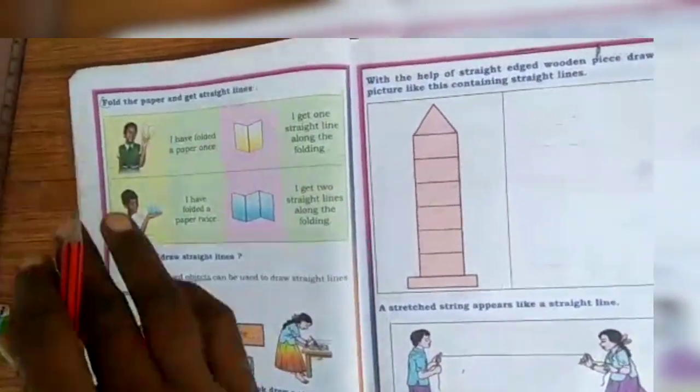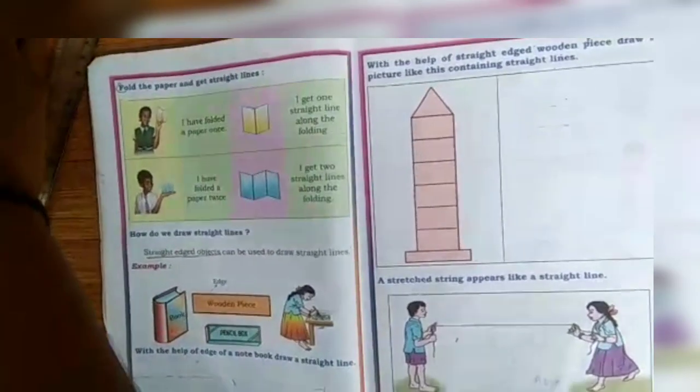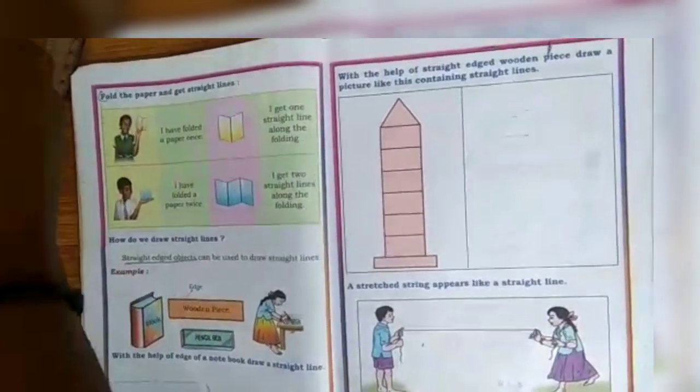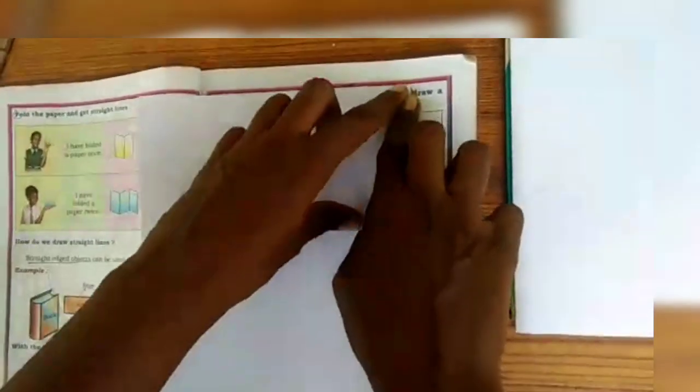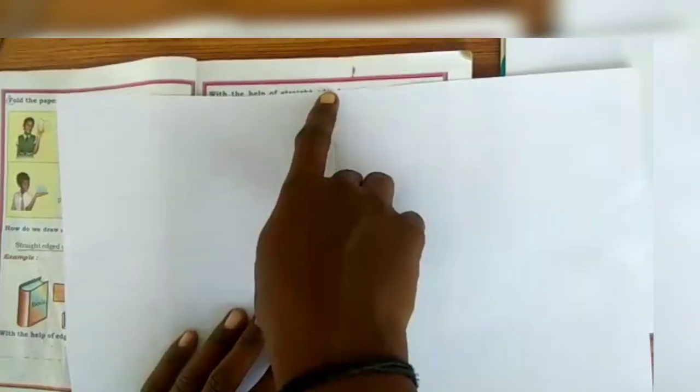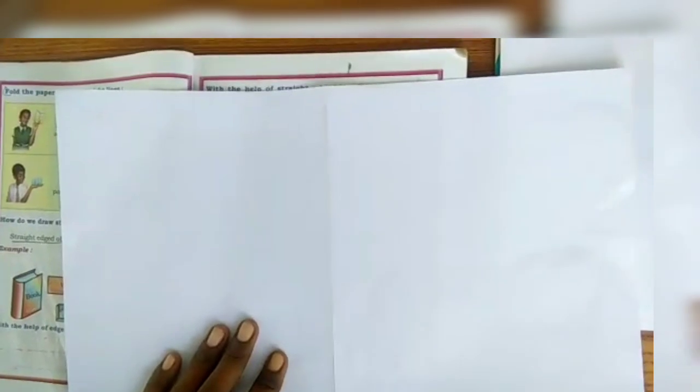Turn the page. Take one small paper and fold one time. So, see this paper in the middle, this is a straight line.